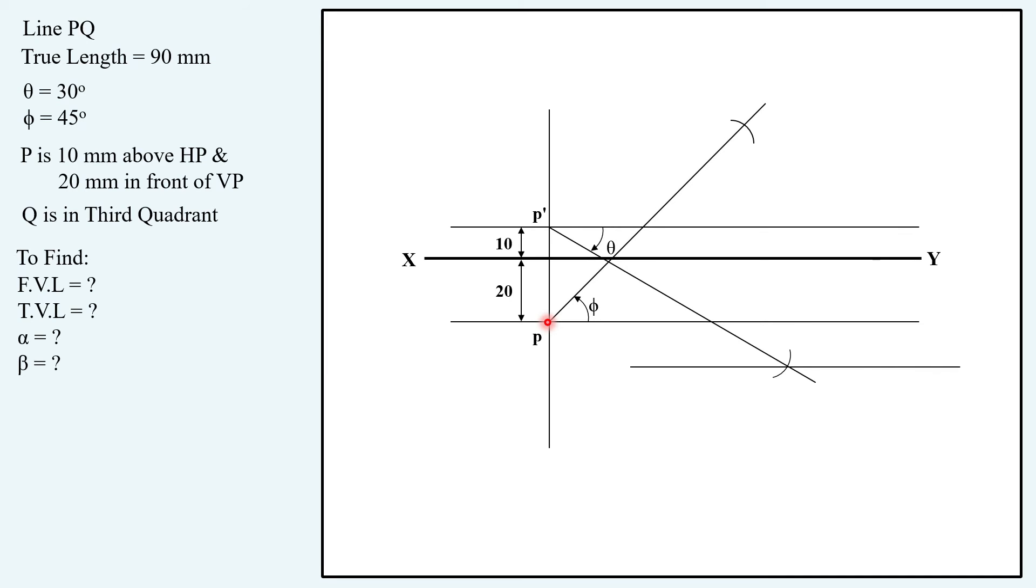Obtaining the locus. So this is the front view locus of point Q with this true length, name as Q1'. Similarly locus of Q in top view corresponding name Q2.